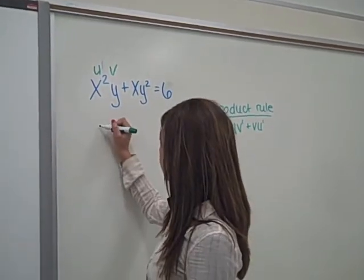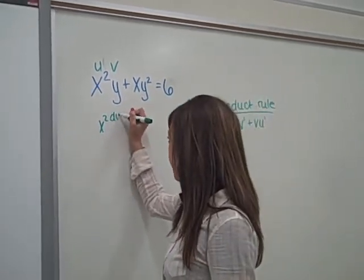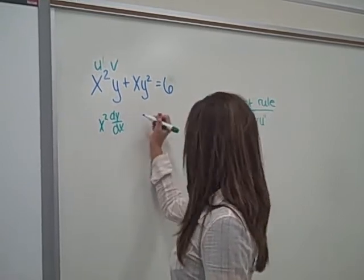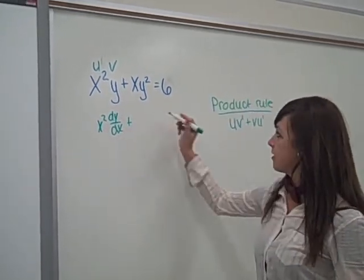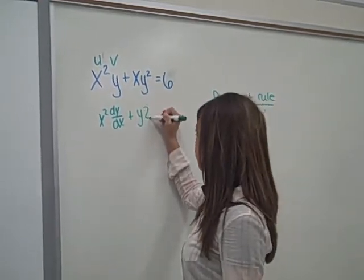we're going to take u, which is x squared times the derivative of y, which is dy over dx, plus v, so y, times the derivative of u, which would be 2x.